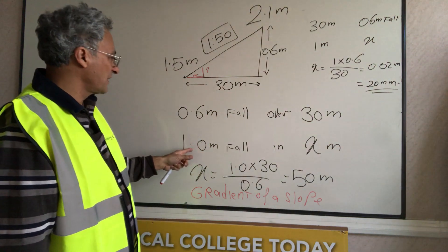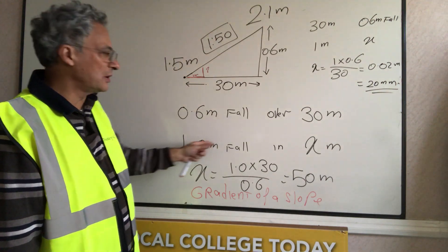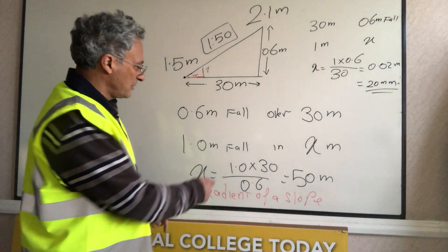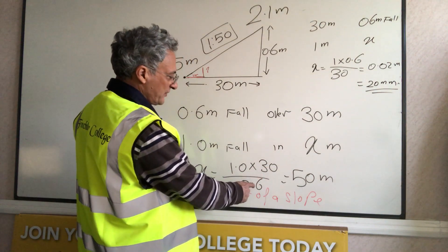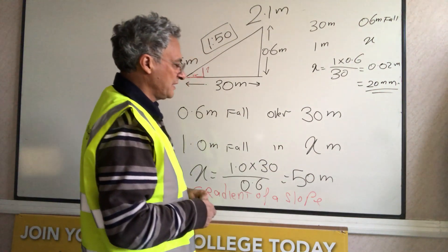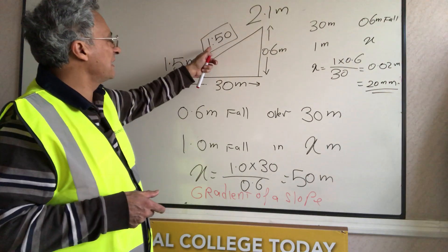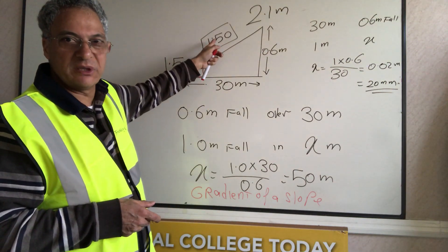What is in 1 meter of fall, what is the distance? So it will be 1 meter times 30 divided upon 6 and that gives me 50. So the gradient will be 1 in 50 meters.